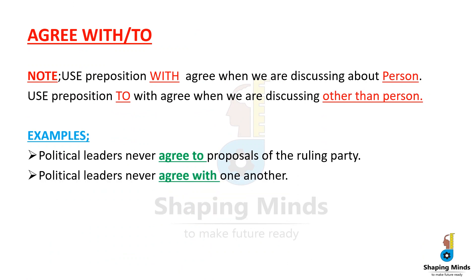Example two: 'Political leader never agrees with one another.' Here we use preposition 'with' with agree because the political leaders are not agreeing with each other — person to person — so 'with' is used.